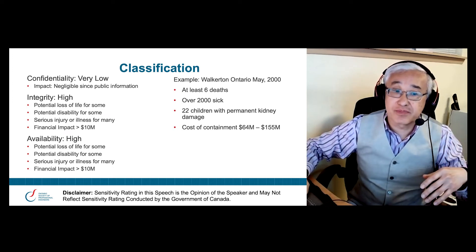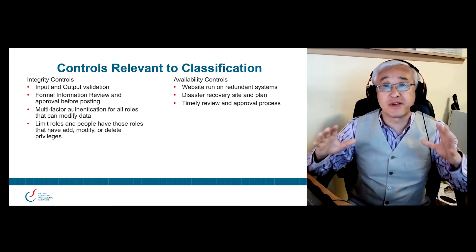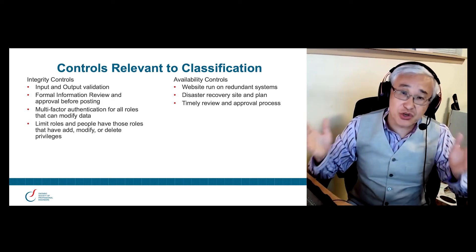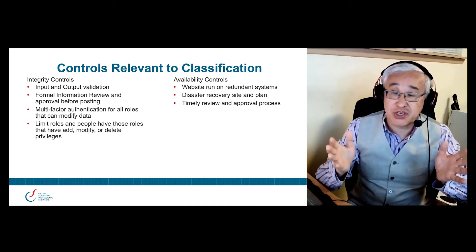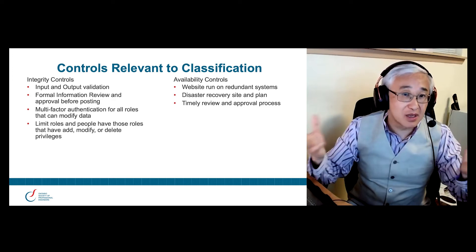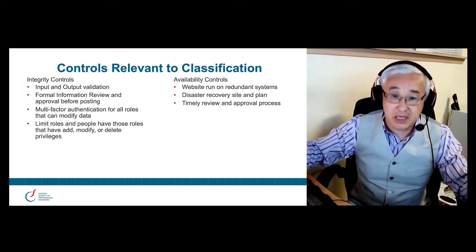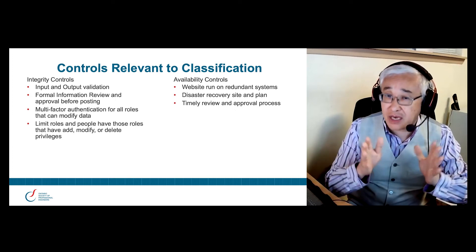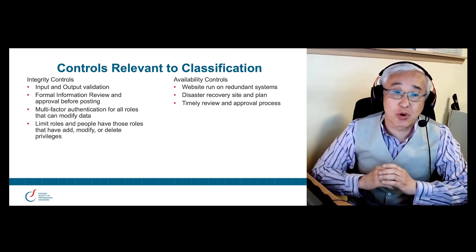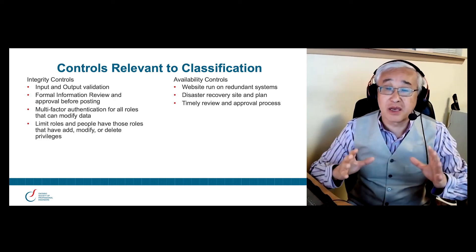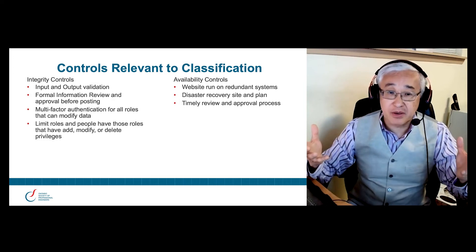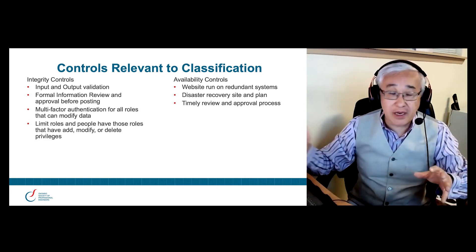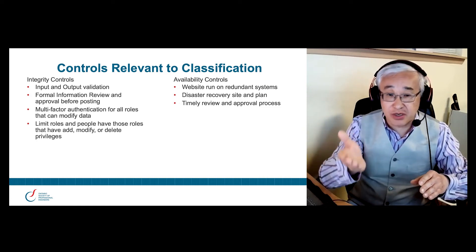That goes to our next slide: controls relevant to the classification. As I mentioned, this is public information, so I'm not concerned about protecting the information from a confidentiality standpoint or putting in controls to prevent the information from being leaked out. I want to ensure there are sufficient controls to protect the integrity of the data. There are a number of types of controls I can put into place — things like, when information is being typed into this website or any system that feeds information into this website, input validation.